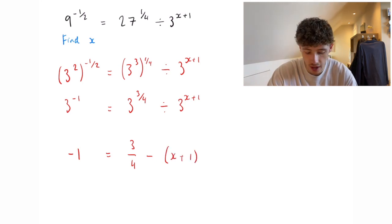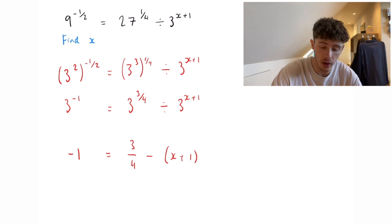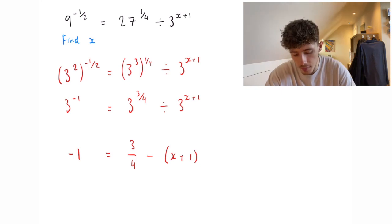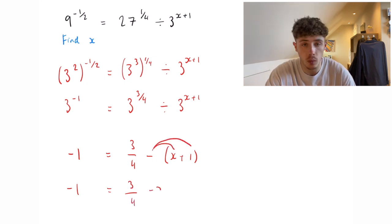Keep that inside the bracket for now because with the negative on the outside it's actually going to make it minus x and minus 1. What I mean is minus 1 equals 3 quarters. It's almost like expanding a bracket. We have minus x minus 1.